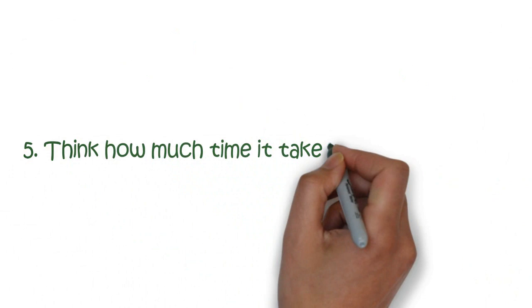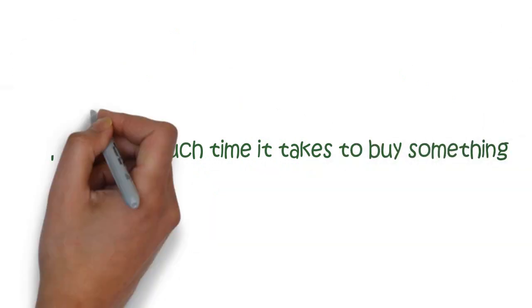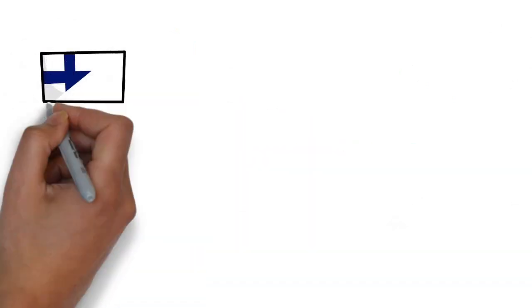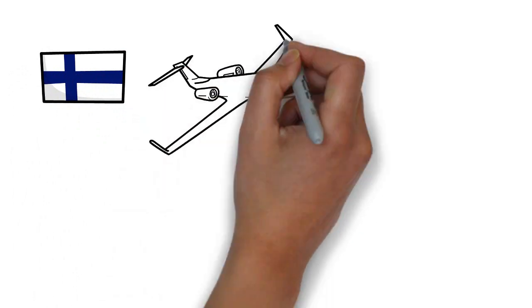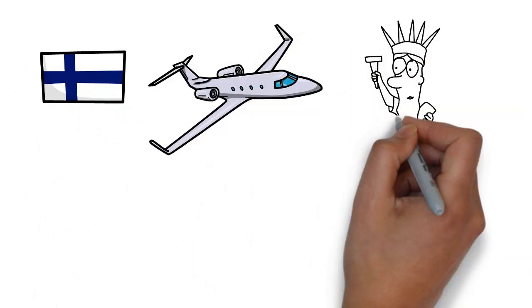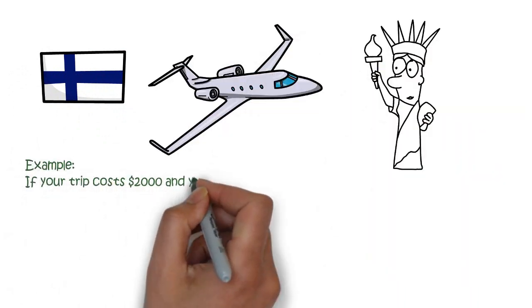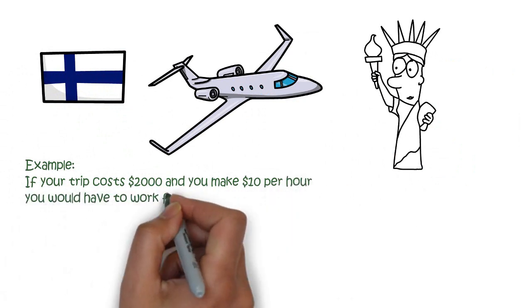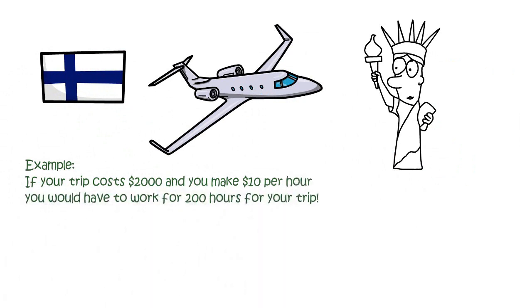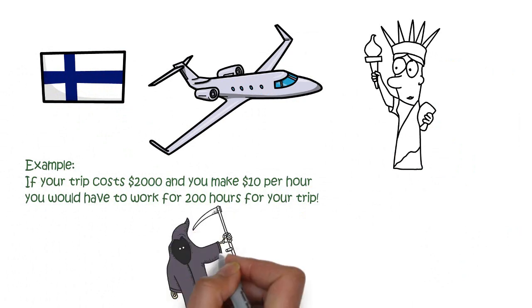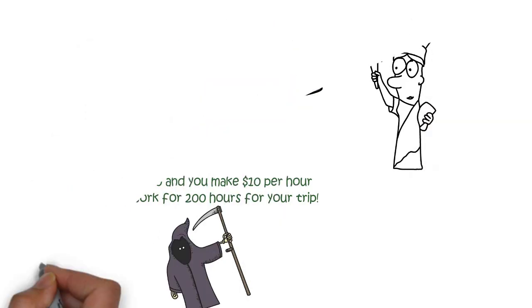Number 5. Think about how much time it takes to buy something. When you plan that one week trip which costs you 2000 dollars, think about the time it takes to make that money. For example, if you make 10 dollars per hour, you would have to work for 200 hours just to spend it on that trip. If you are still comfortable spending that money, then go ahead. But remember, time spent is one of those things we can never get back.